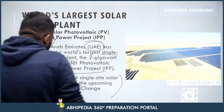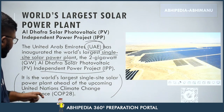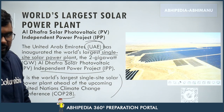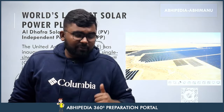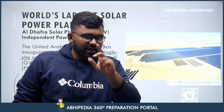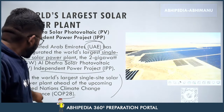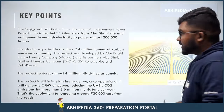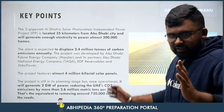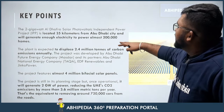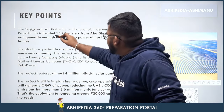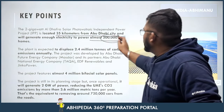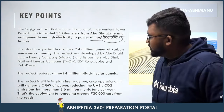This is the world's largest single-site solar power plant and it was inaugurated just ahead of the upcoming COP28 — the United Nations Climate Change Conference. It is located 35 km from Abu Dhabi city and generates enough electricity to power almost 2 lakh homes. It is a good engineering feat.